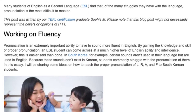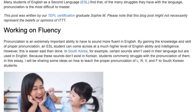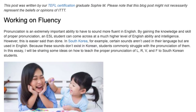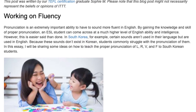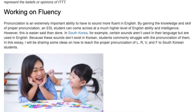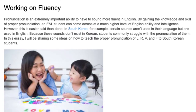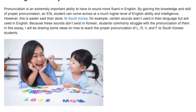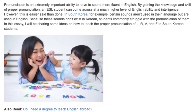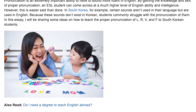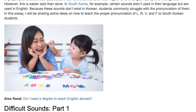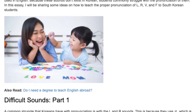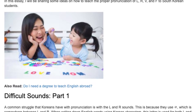Difficult Sounds, Part 1. A common struggle that Koreans have with pronunciation is with the L and R sounds. This is because they use ㄹ, which is somewhere between L and R. When writing down English words using Korean characters, this letter is used for both L and R, making Koreans accustomed to using this sound to replace both letters. Some Koreans' pronunciation of ㄹ sounds closer to R, while others' sounds closer to L. This explains why Koreans saying the word 'really' can sound like 'Lili' or 'Riri.'